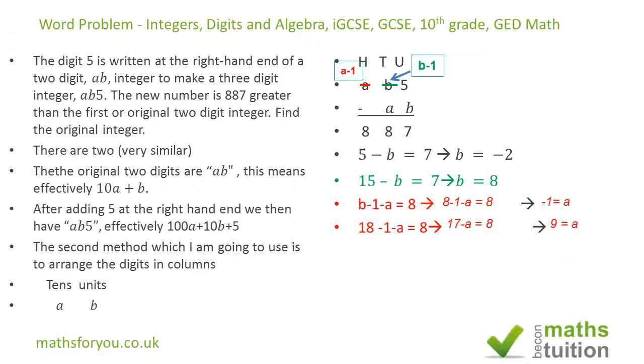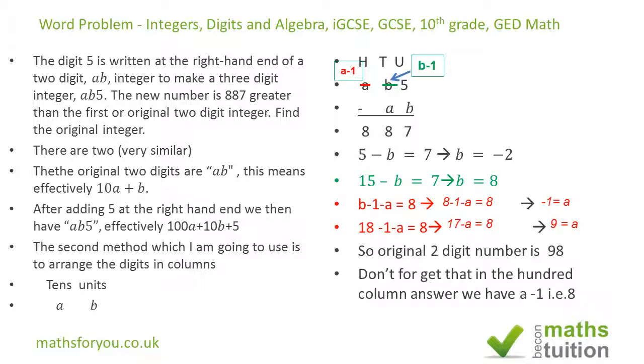Okay, now don't forget here that because this is now 9 minus 1, because a is 9, nine minus 1 is 8, so this 8 comes down here.